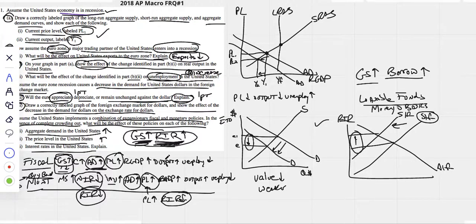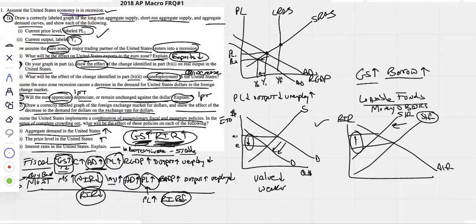So when government spending rises, real interest rates go up — that's fiscal policy. But monetary policy says they're going down. Therefore, the net effect on real interest rates is indeterminate. We don't know which force is larger — is government spending driving it up more than the Fed is lowering it? We explain: as government spending increases it drives up the real interest rate, and as the Fed increases the money supply it drives it down — therefore indeterminate.